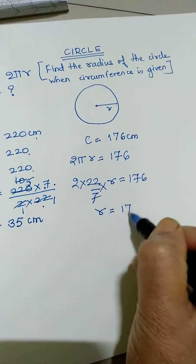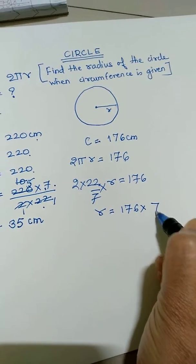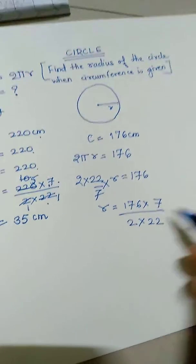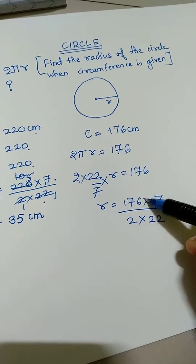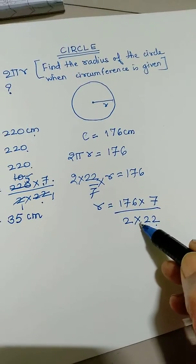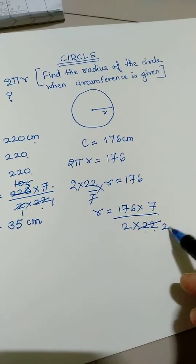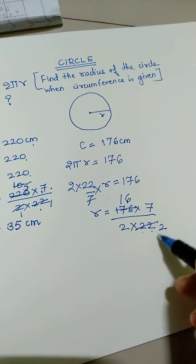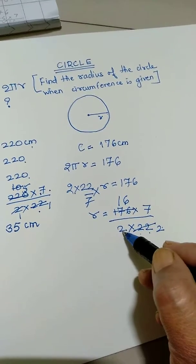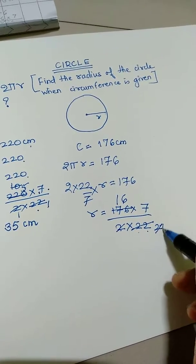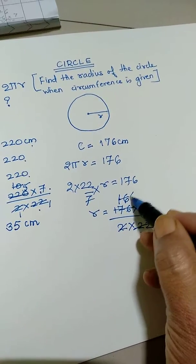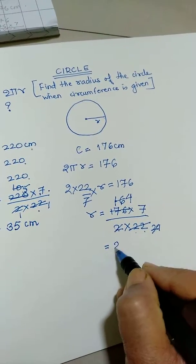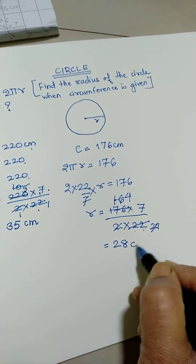Therefore r is equal to 176 into 7 divided by 2 into 22. Now see 176 is divisible by 11, 22 is divisible by 11. So dividing both by 11 gives us 16 and 2. We have 2 into 2, which is 4 in the denominator. So 16 divided by 4 is 4. So in the numerator now we have 4 into 7 which works out to be 28 centimeter.